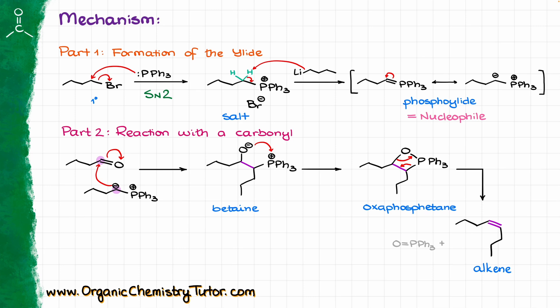The formation of triphenylphosphine oxide is important because it is essentially the driving force for the last step. The oxygen-phosphorus double bond is incredibly thermodynamically stable, and because of that, it is so much more favorable to form that P=O double bond that our four-membered ring, the oxaphosphetane, just spontaneously breaks apart.